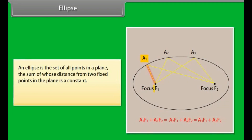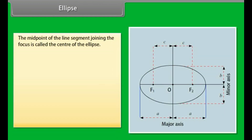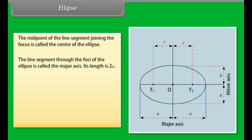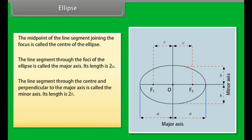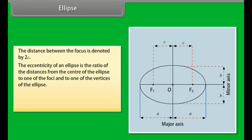Ellipse. An ellipse is the set of all points in a plane, the sum of whose distances from two fixed points in the plane is a constant. The two fixed points are called the foci of the ellipse. The midpoint of the line segment joining the foci is called the center. The line segment through the foci is called the major axis; its length is 2a. The line segment through the center and perpendicular to the major axis is called the minor axis; its length is 2b. The distance between the foci is denoted by 2c. The eccentricity is e = c/a.